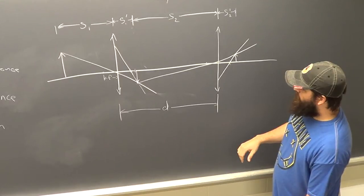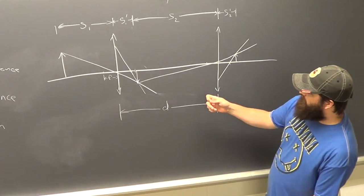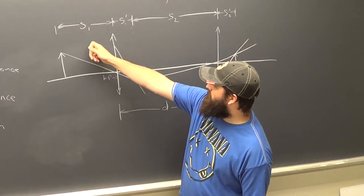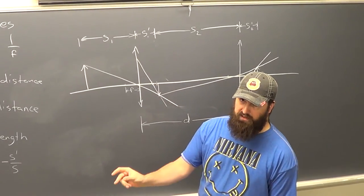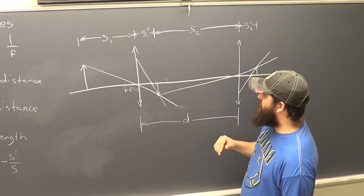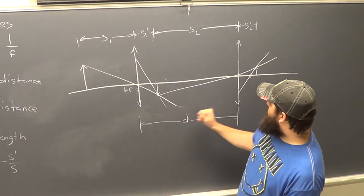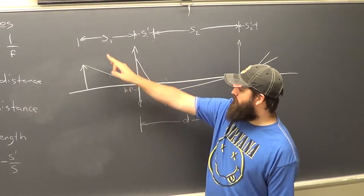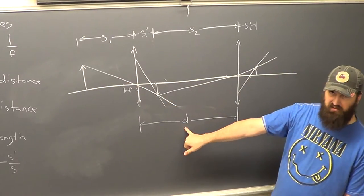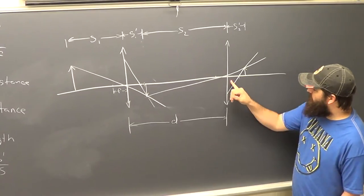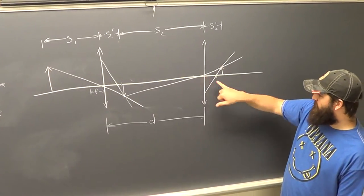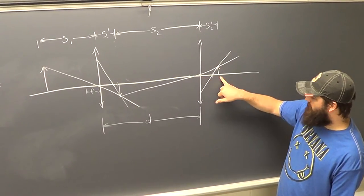The measurements that we will take on the single lens equation will be S1 and S1 prime. Then you'll move your lens, take those measurements again at a different position. For the two lens system, we'll measure S1, D, which is the distance between the two lenses, and S2 prime, which is the distance between your second lens and the screen.